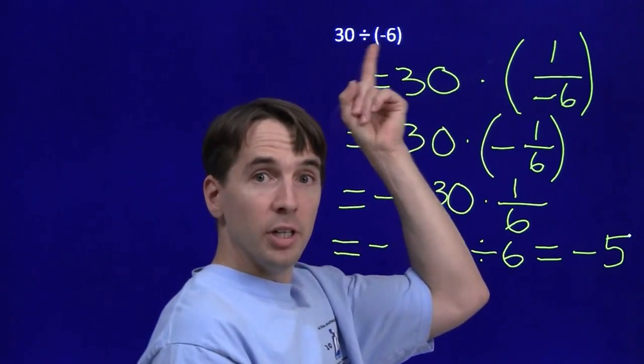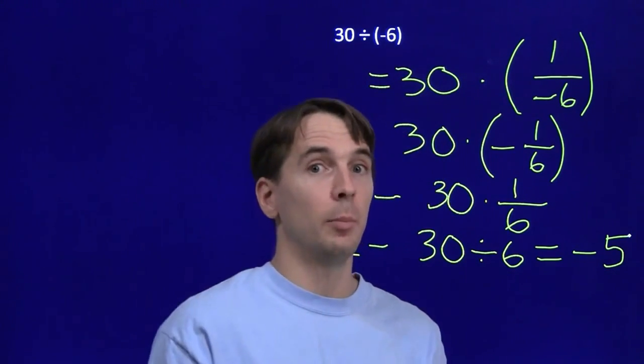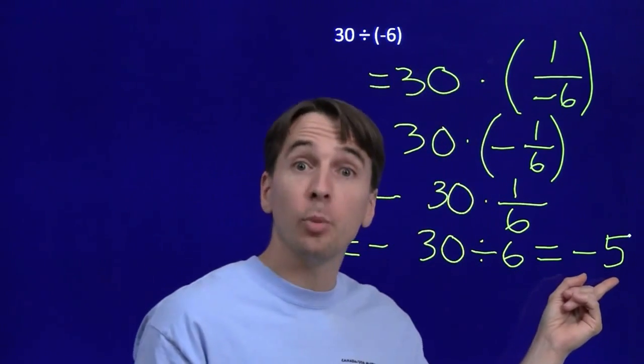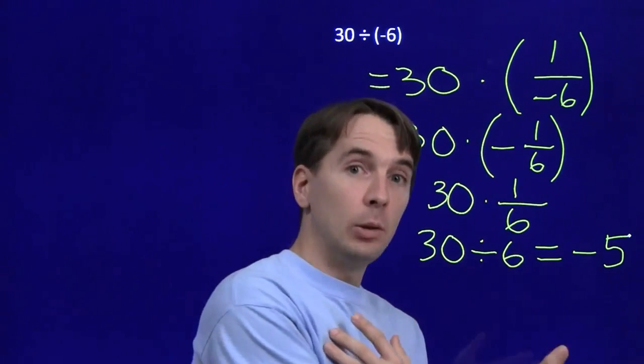So we take a positive 30, divide by a negative 6, and we get a negative 5. And any time we take a positive number and divide by a negative number, we'll go through steps just like these, and we'll end up with a negative result. Positive divided by negative equals a negative.